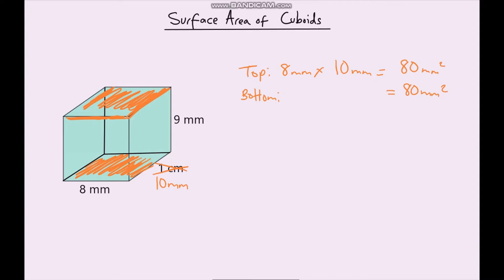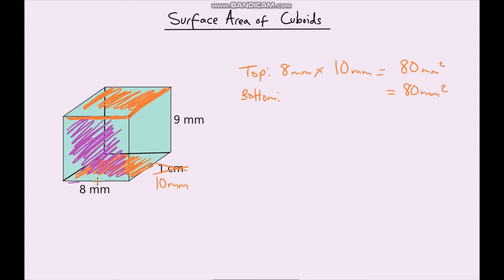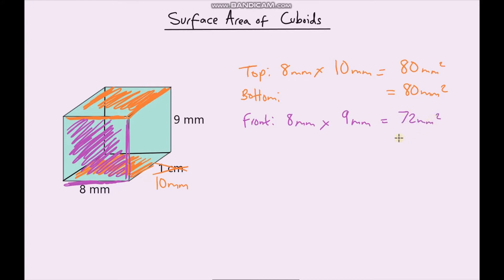Let's pick a different colour — let's choose fuchsia. So let's look at the front face — that's this one here. The front face is going to be 8 millimetres multiplied by the height, which is 9 millimetres, which gives us 72 millimetres squared.